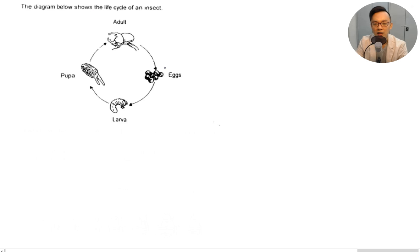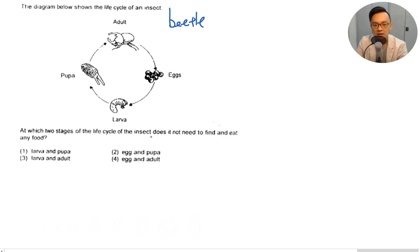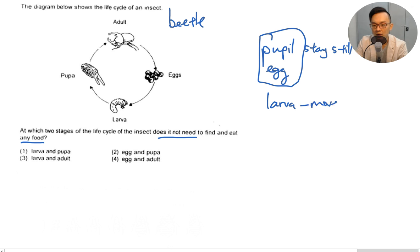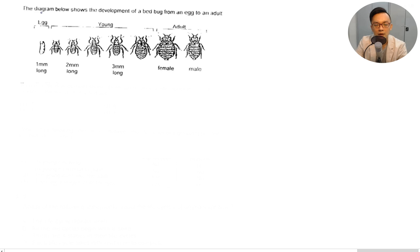The diagram shows the life cycle of an insect — adult, pupa, larva, egg — a four-stage life cycle. At which two stages does the insect not need to find and eat any food? Remember: the pupa stays still and doesn't eat, and the egg doesn't do anything either. The larva moves and eats; the adult also needs food. The answer is number 2: pupa and egg.